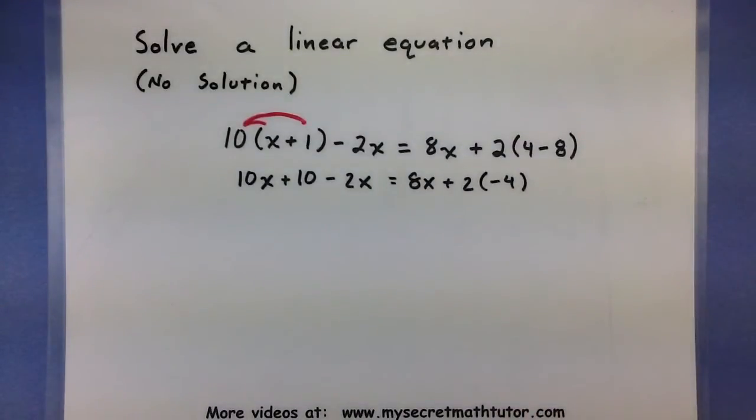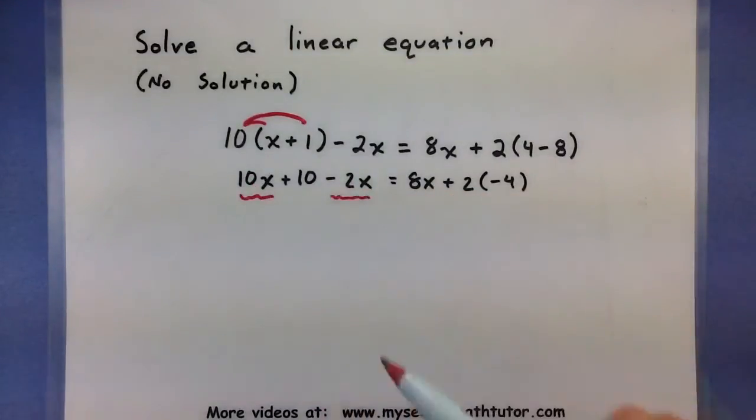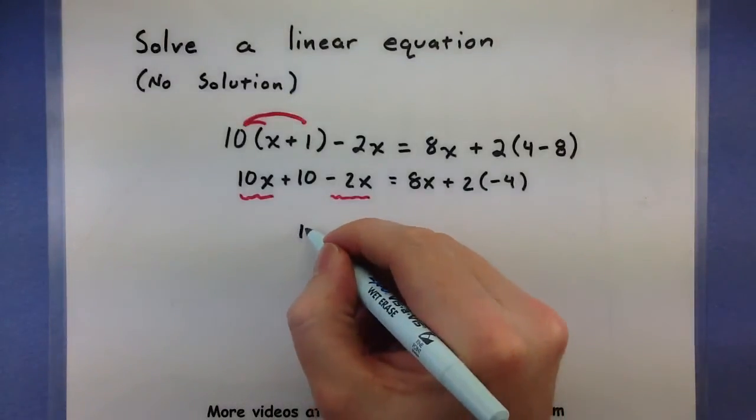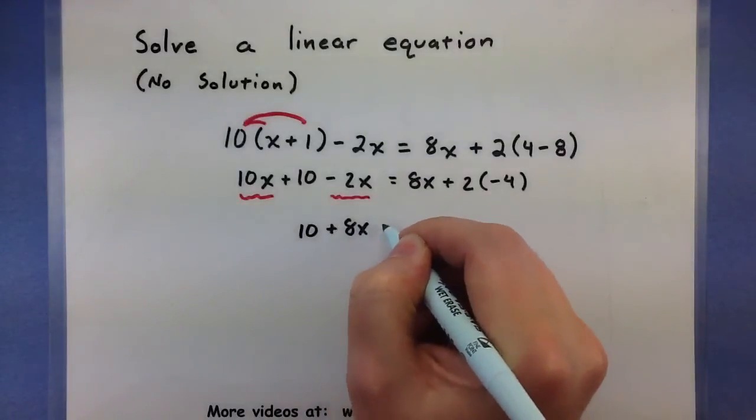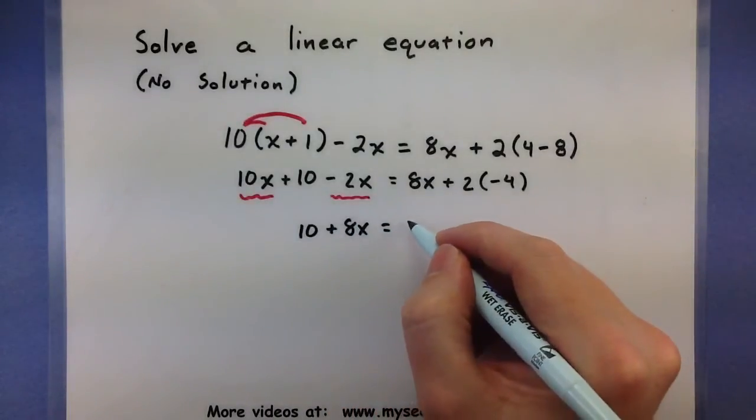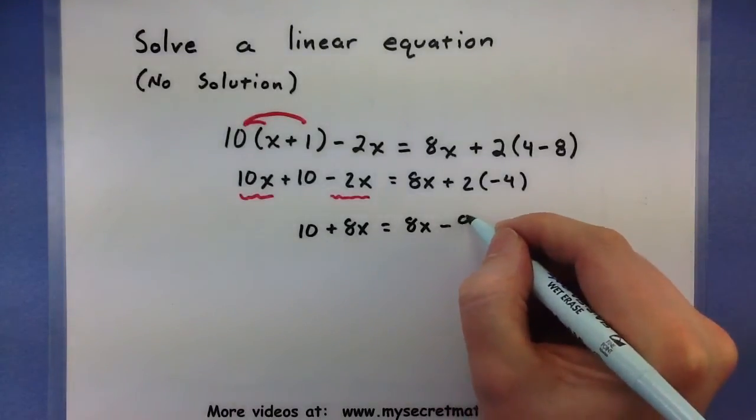Okay, looking pretty good. I can see a few terms in there that we'll go ahead and combine like maybe this 10x and this minus 2x. So it will give us 10 plus 8x. And here I have 8x minus 8.